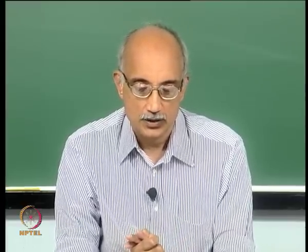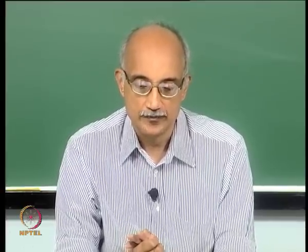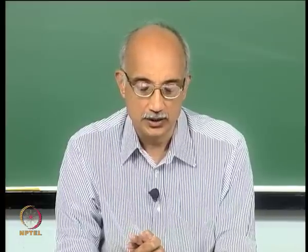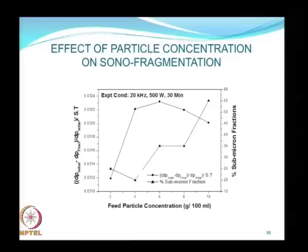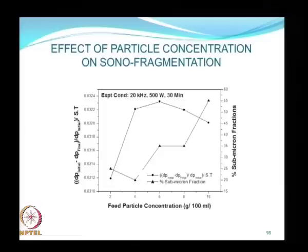We were reviewing some data from this top-down method of nanoparticle synthesis, and we will continue to do that in this lecture. One of the key parameters is particle concentration and its effect on sonofragmentation efficiency. If you plot the size reduction characteristics against the feed particle concentration, you see an interesting behavior: the mean size is actually reduced to the greatest extent at some intermediate value of particle concentration. If the concentration is lower or higher than this optimal value, size reduction is reduced.